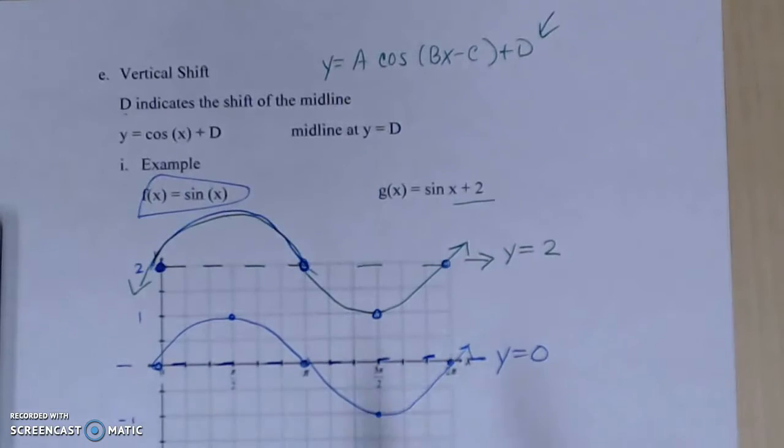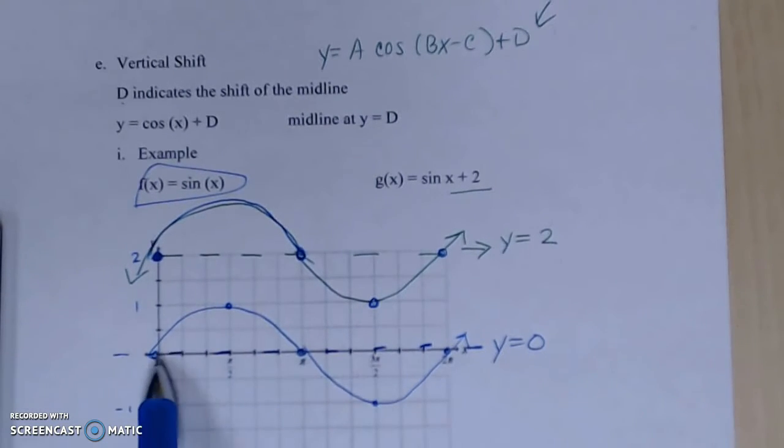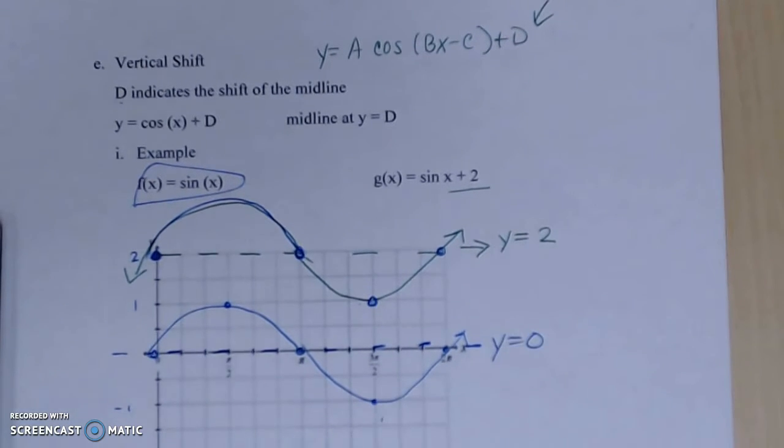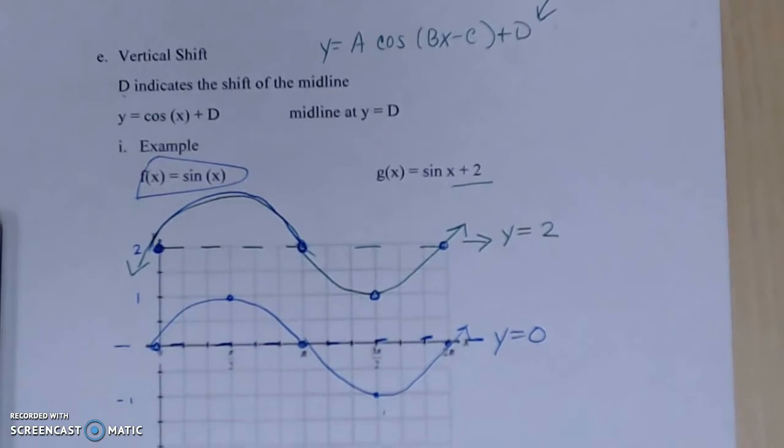So you can see that your sine function has just moved all the points up 2 units, or in general moved your midline up 2 units. And so what you're going to be able to do now is take all of these different changes and characteristics, and let's just kind of summarize it all together.